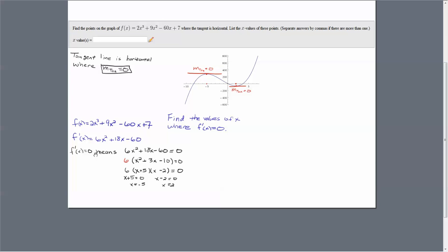f'(x) = 0 means we set 6x² + 18x - 60 equal to zero. We're going to factor out the 6 and factor this, because that's how we solve a quadratic.